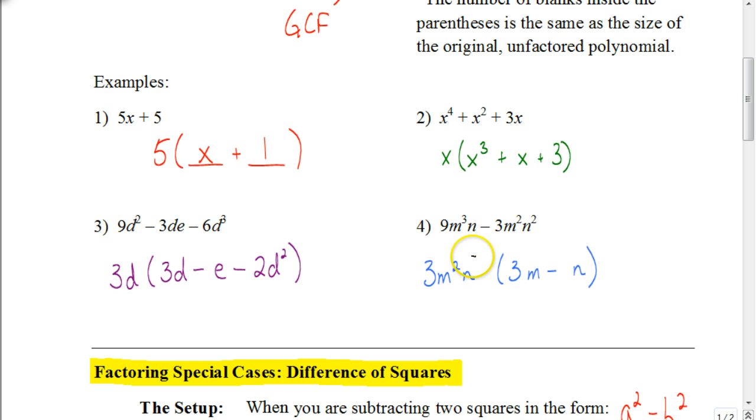The second term, 3 divided by 3 is 1. We factored out an m squared. We factor out an n from the n squared, leaves us with just n. So our answer is 3m squared n times the quantity 3m minus n.